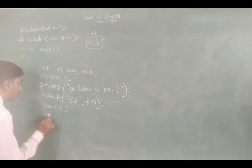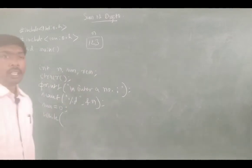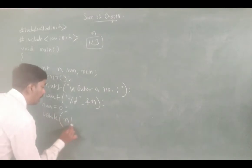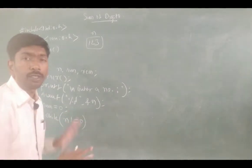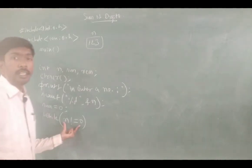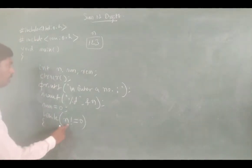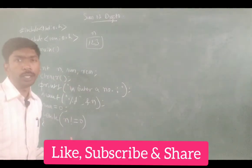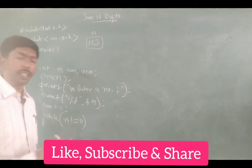Next, we use the while loop with the condition: n is not equal to 0. This is the main condition. If n value is 123, then 123 is not equal to 0, so the condition is true.